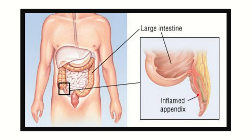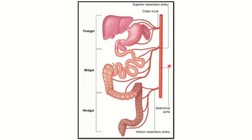We need to find the embryological origin of the appendix. The whole digestive tract is derived from three sources: the foregut, midgut, and hindgut. The foregut gives rise to the esophagus, stomach, and the duodenum up to the major duodenal papilla — up to the second part of the duodenum.